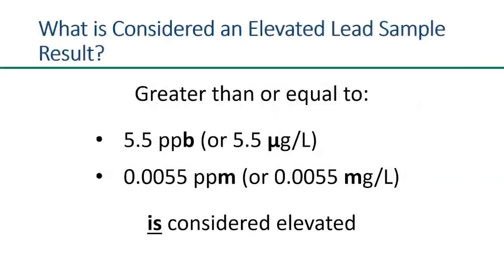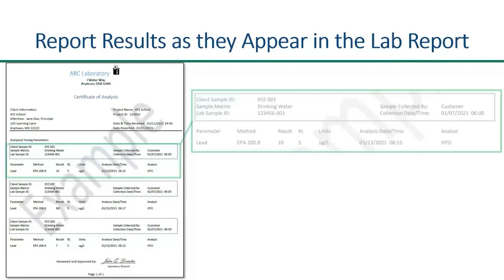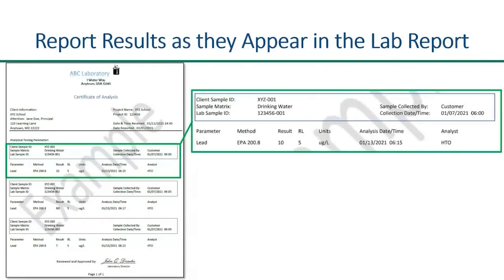To summarize, if your lab results are greater than or equal to 5.5 parts per billion or 0.0055 parts per million, it is considered elevated. When reporting results to MDE, please report the results exactly as they appear in the lab report, including all decimal places and units.